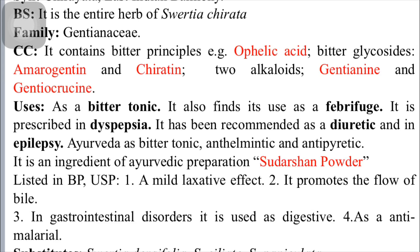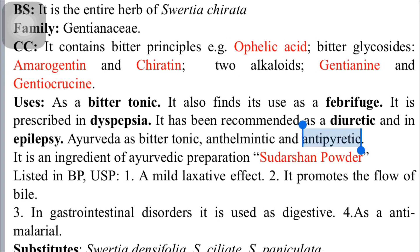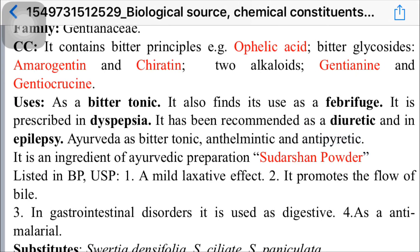The alkaloids in Chirata are of two types: gentiananine and gentiocrucine. The functions of these are not so well known. Other well-known examples of alkaloids include caffeine and morphine.